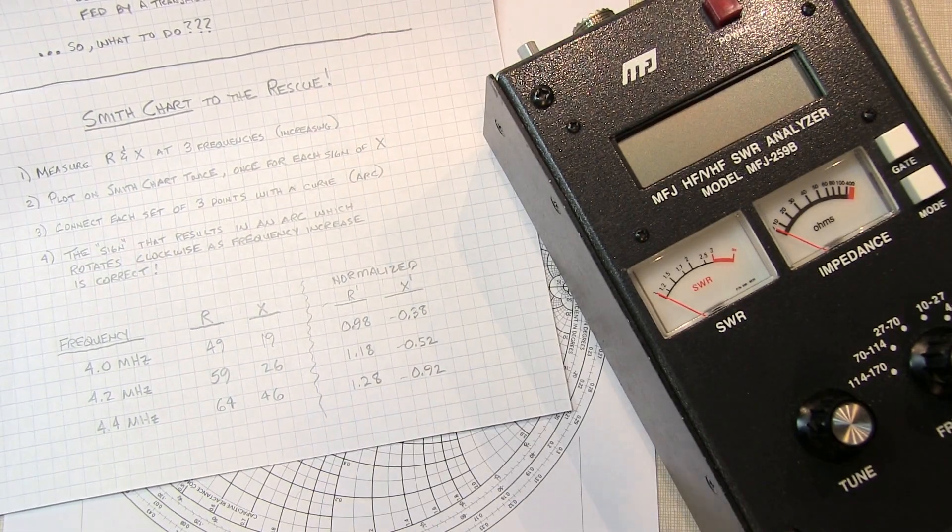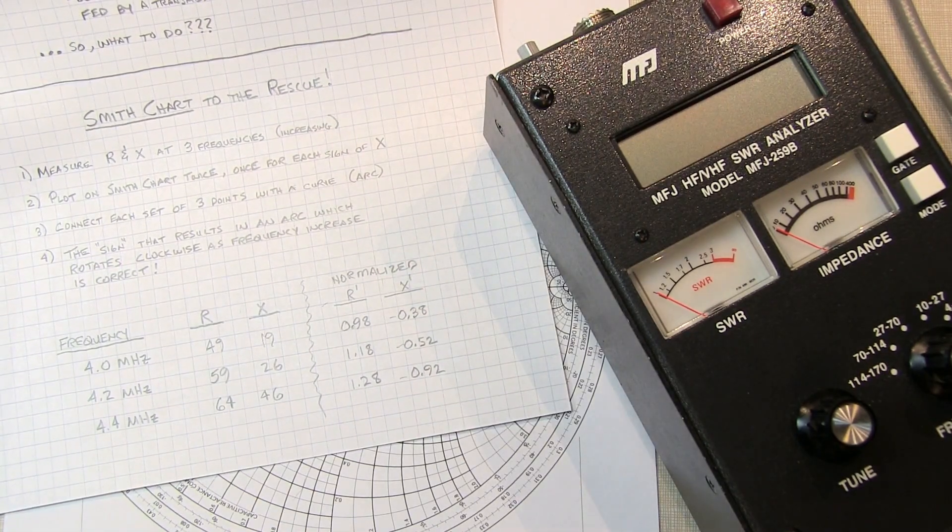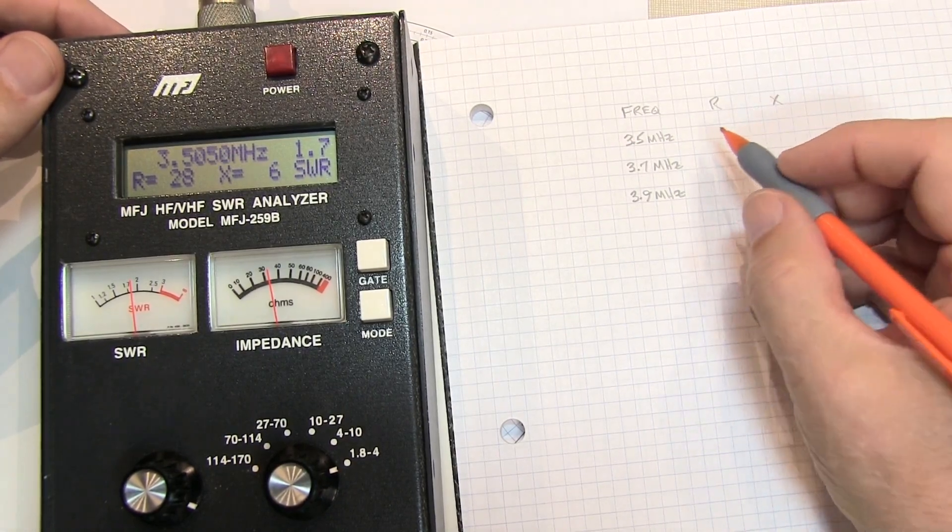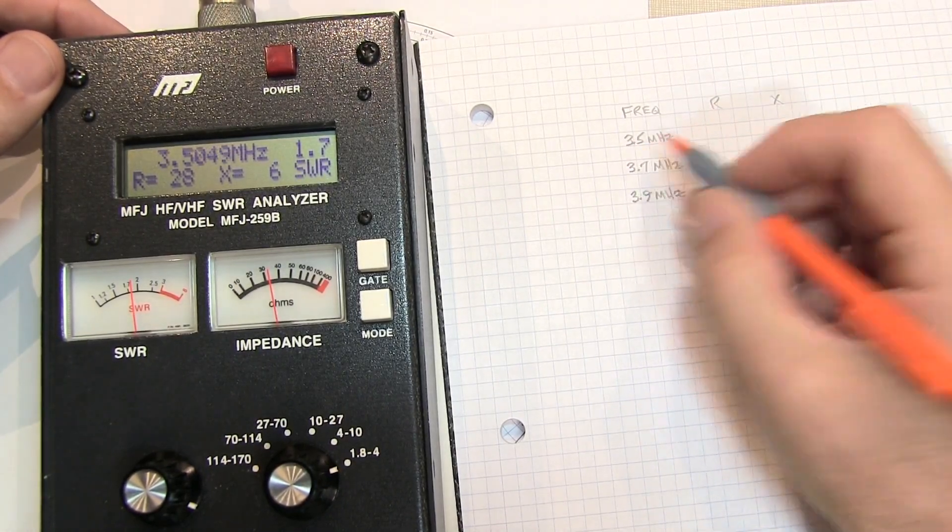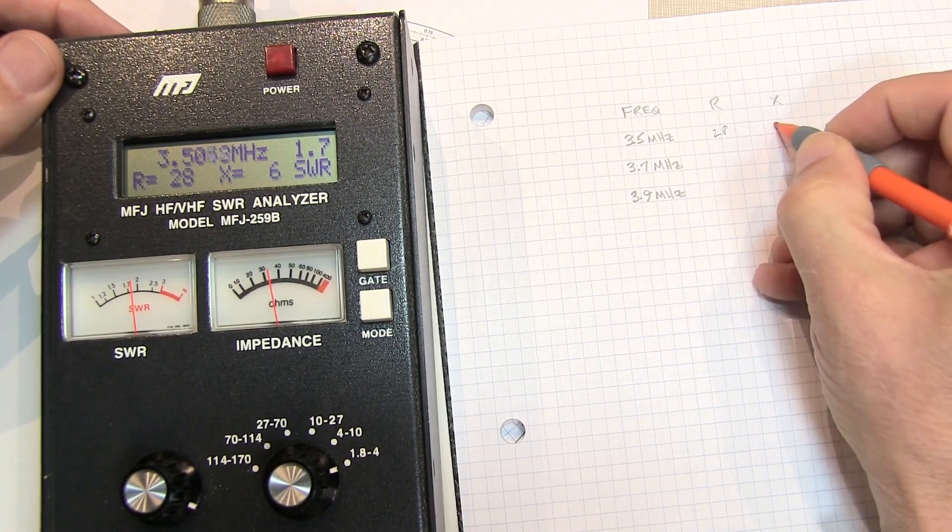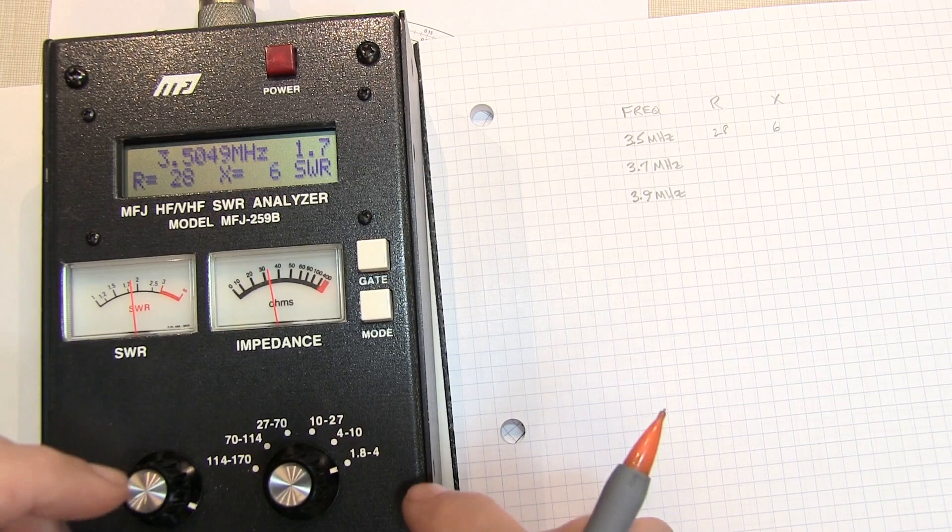So you just have to take a little bit of care when you're taking the measurements. Let me show you what I'm talking about. So I've placed a different load on my analyzer here, and let's take these three frequency readings. At 3.5 MHz, R is 28, and my reactive component is 6.